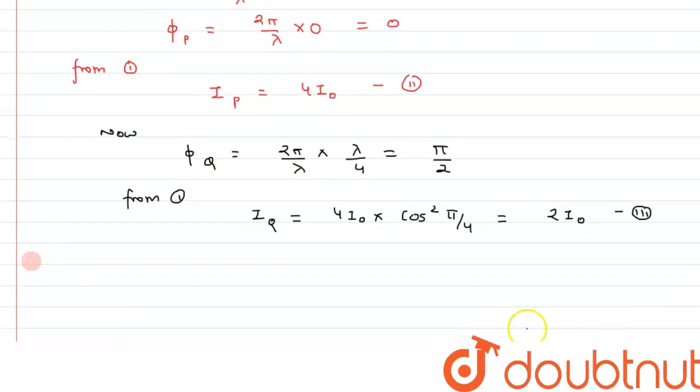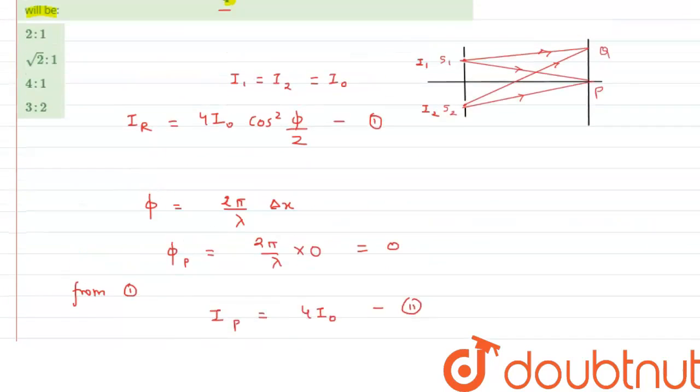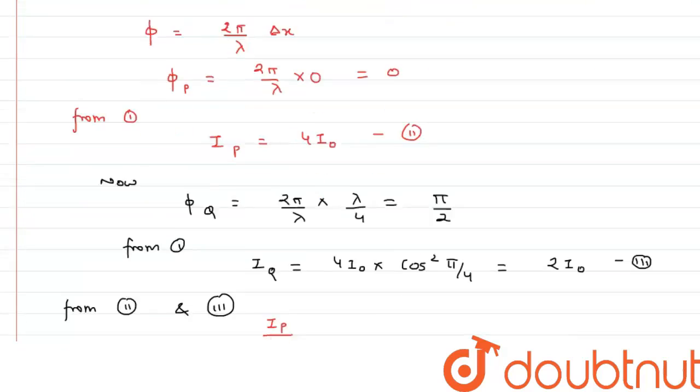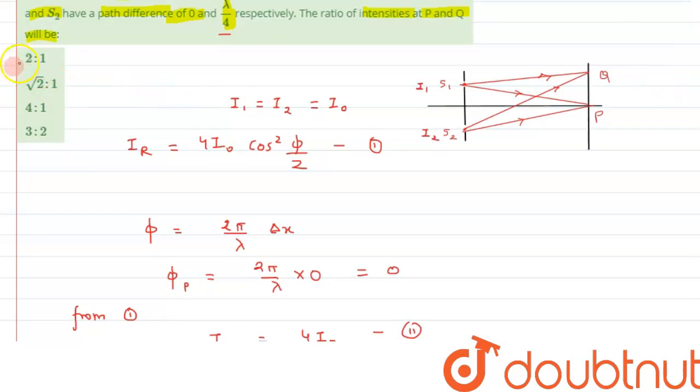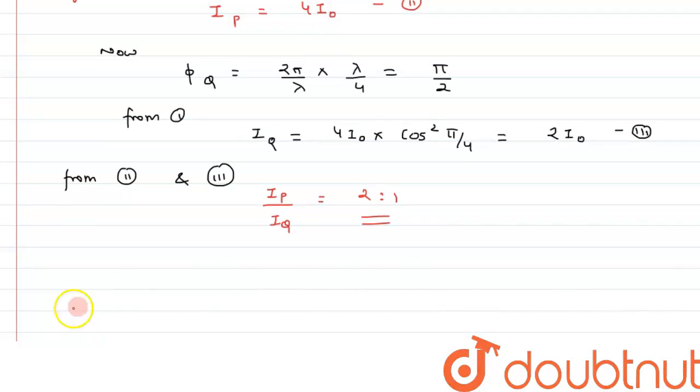From equations 2 and 3, we need to find the ratio I_P/I_Q. This gives us 4I₀/2I₀ = 2:1. This is the answer to the question. Checking the options, option A is correct. I hope you've understood the concept. Thank you for watching.